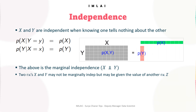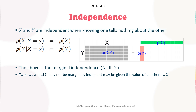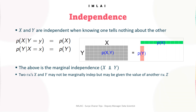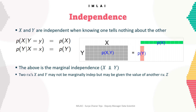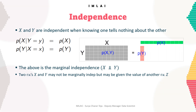Two random variables X and Y are independent when knowing one tells nothing about the other — if there is no dependency. This means that the occurrence of one event does not affect the probability of the other event occurring. That's when we say X and Y, two random variables, are independent.